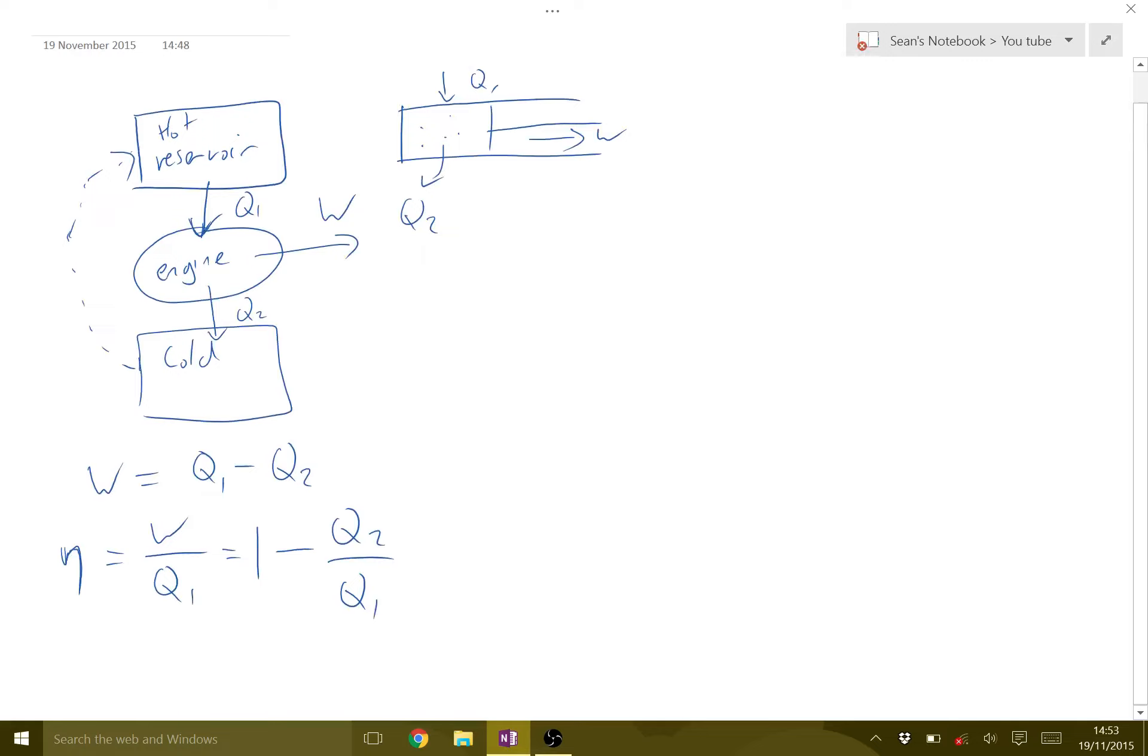So for an engine to be useful, it needs to be like a cycle. It needs to work more than once. So in a cyclic process, we get back to where we started. And we can think about how we draw that on a pressure volume diagram.